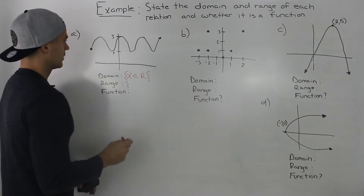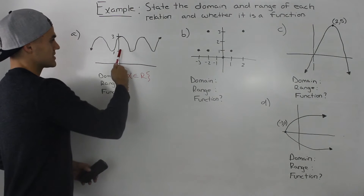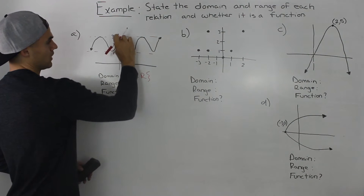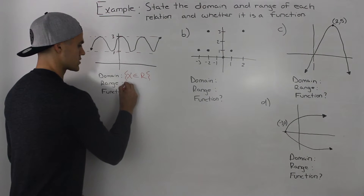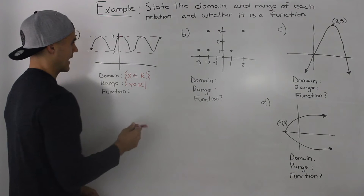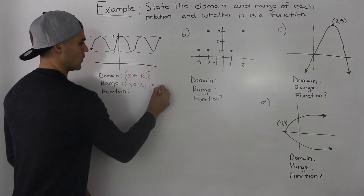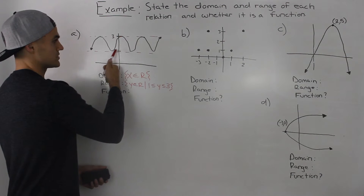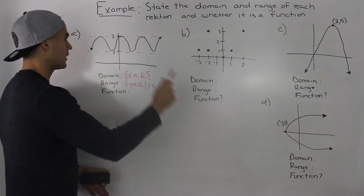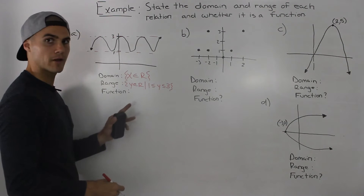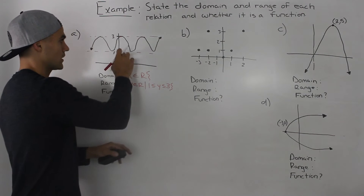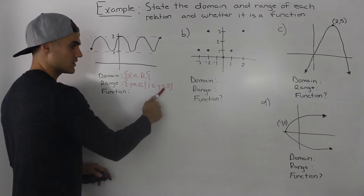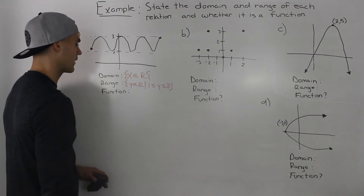Now what about the range? The range can be anything as long as it's between 1 and 3. Notice how this wave is never leaving that range between 1 and 3 — the y values 1 and 3. There's an infinite amount of y values; it could be 1.01, 1.001, 1.0001, or 2.9, 2.99, etc. Notice how I wrote inclusive of 1 and 3, so y has to be greater than or equal to 1 and less than or equal to 3, because it is hitting those y values in the graph.